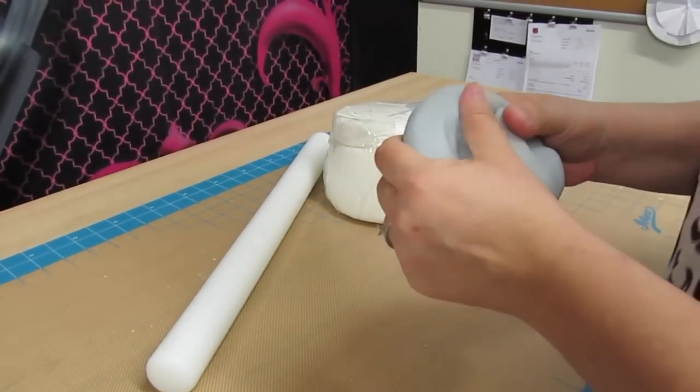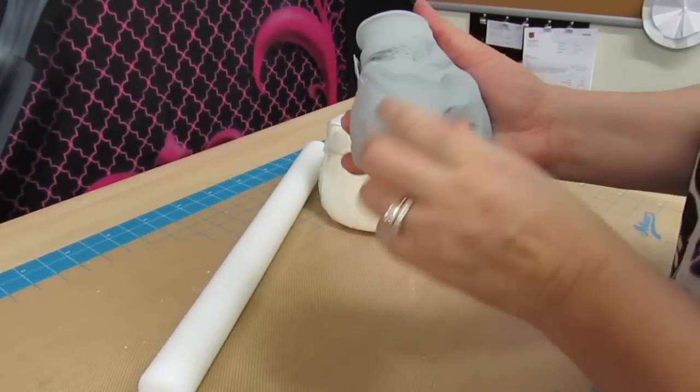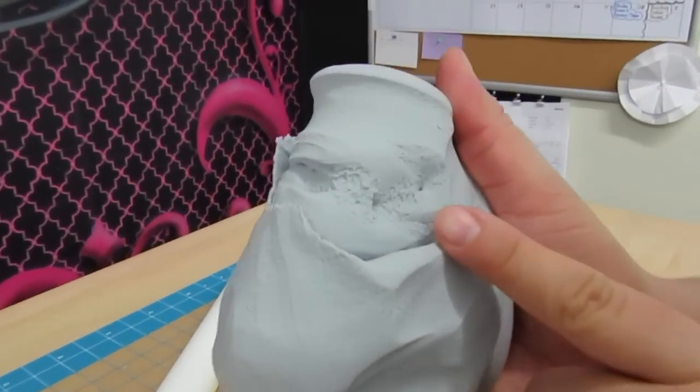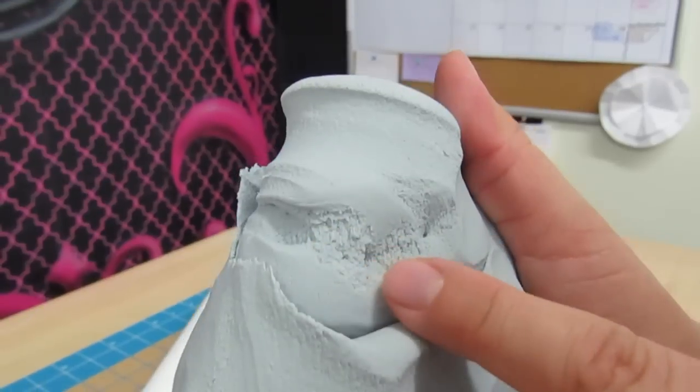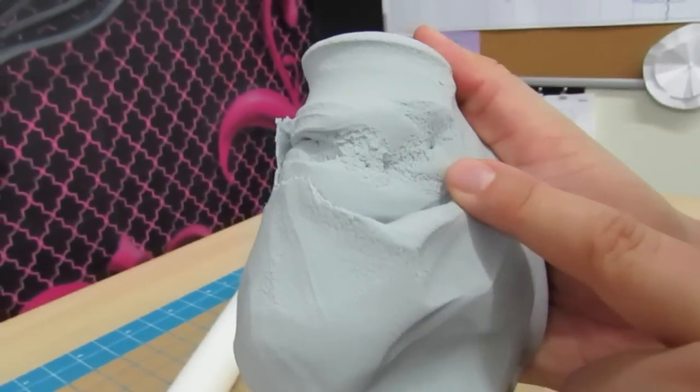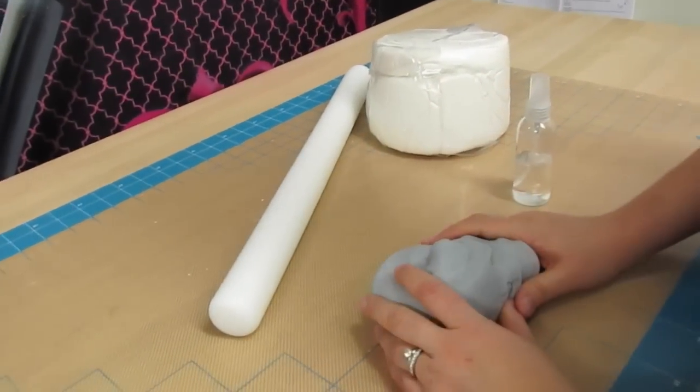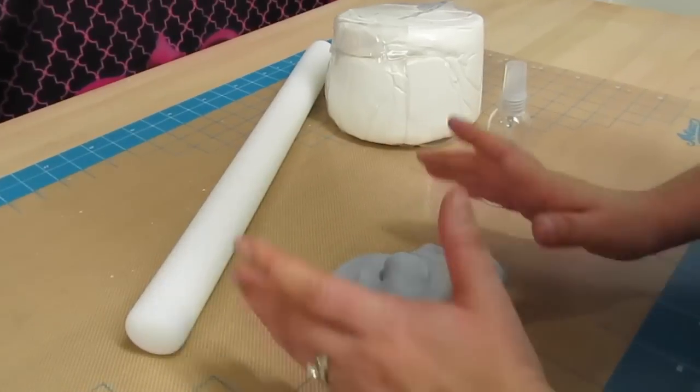So I wanted to show you what fondant looks like when you're kneading it. I don't know if my husband can zoom in here, and you can see these tiny little wrinkles and little tiny cracks. So if you're kneading your fondant and you see this, this is a very good sign that your fondant is already drying out.